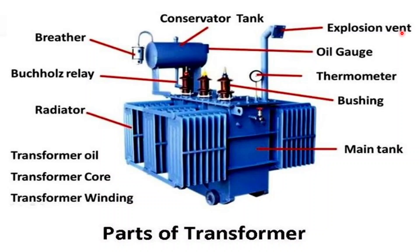Next, we have the explosion vent. The explosion vent provides a controlled path for the release of excessive pressure that can build up inside the transformer tank, typically due to internal faults. It prevents catastrophic failure by allowing pressure to escape, thereby protecting the transformer and surrounding equipment from damage.